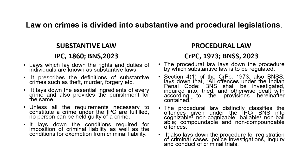In the previous lesson, we discussed what are the essential ingredients of a crime, and they are human being, actus reus, mens rea and injury. Now moving beyond that, when we talk about criminal law, it is pertinent to understand that law on crimes is divided into essentially two parts: one is the substantive law and the other one is the procedural law.